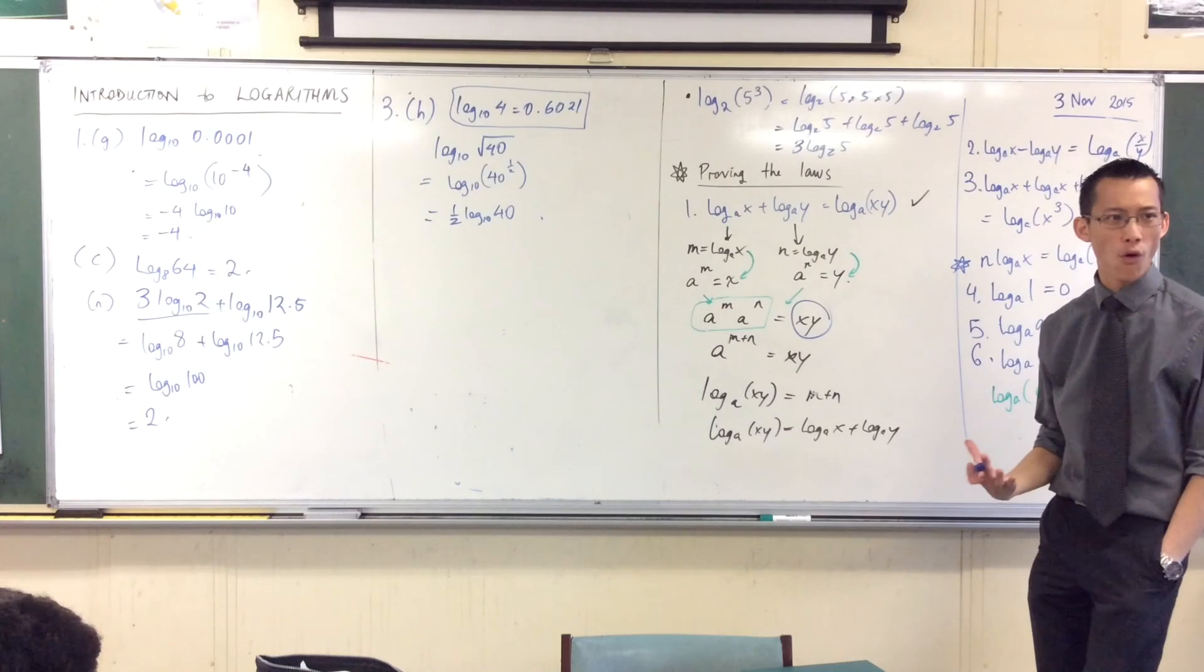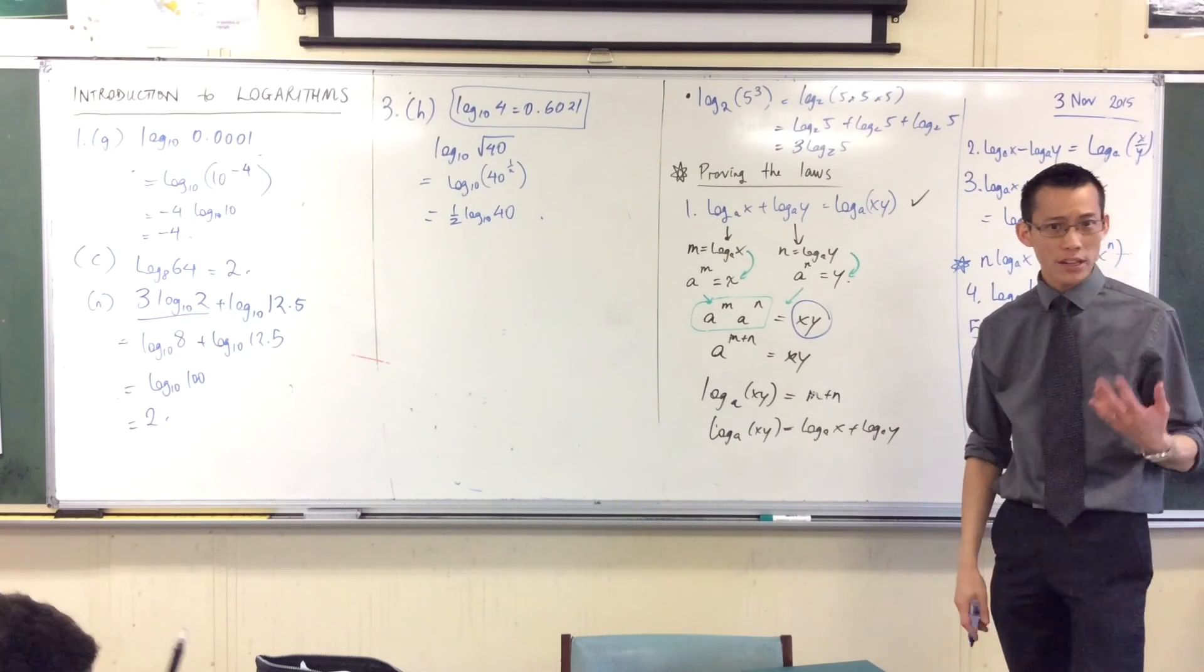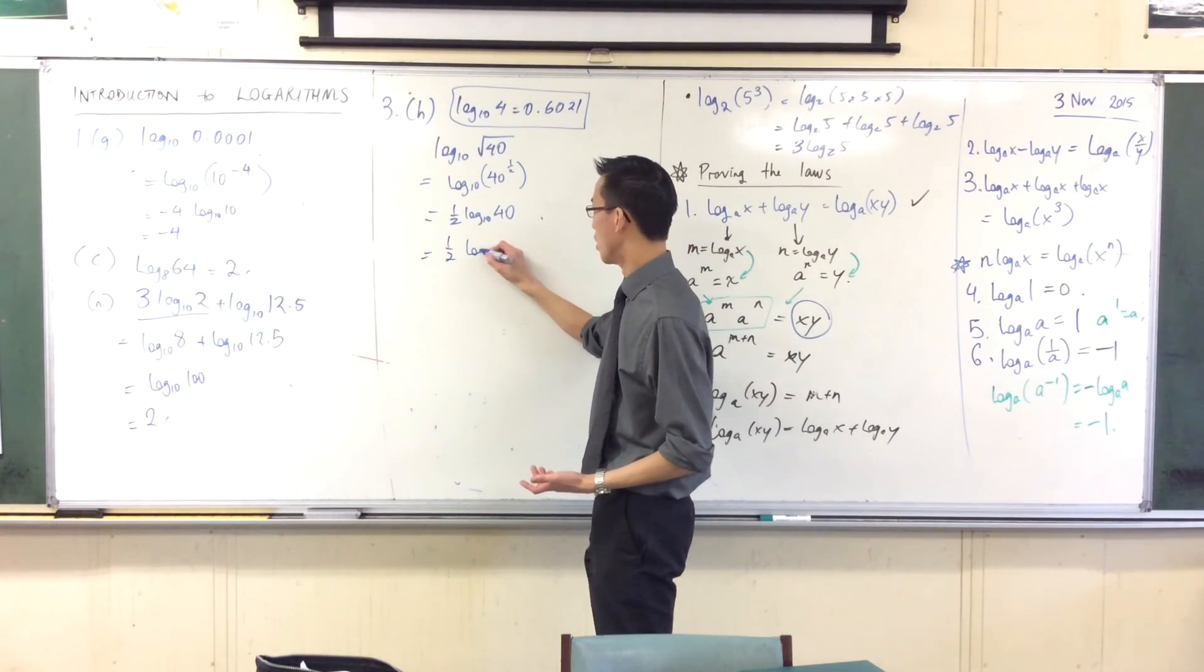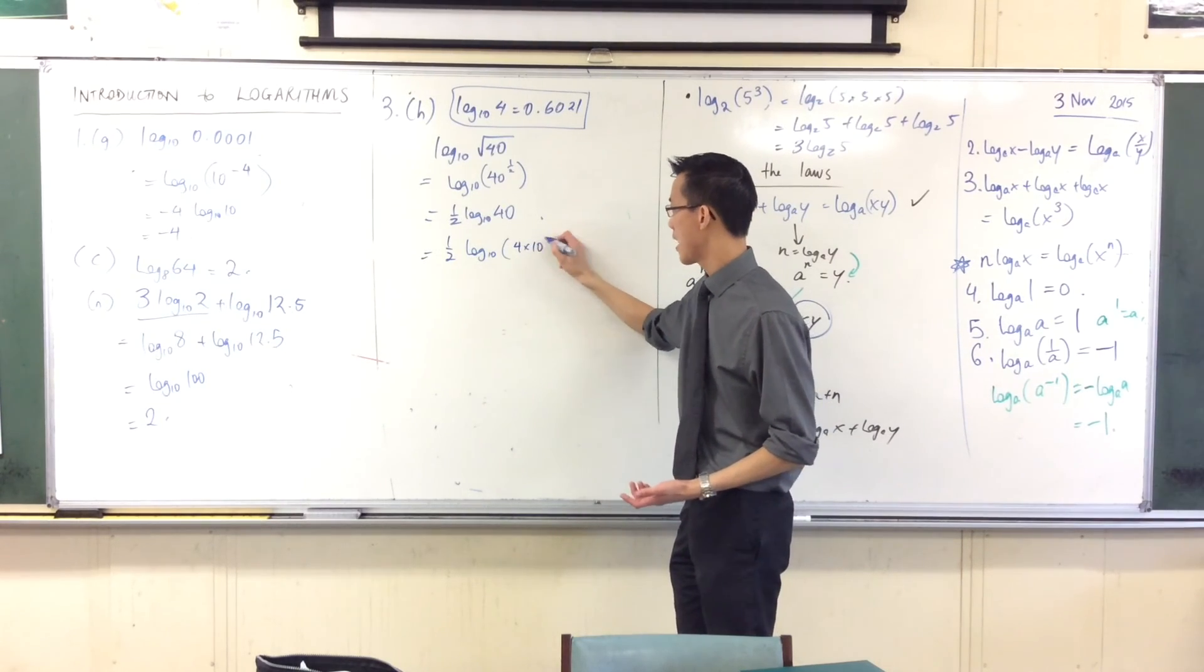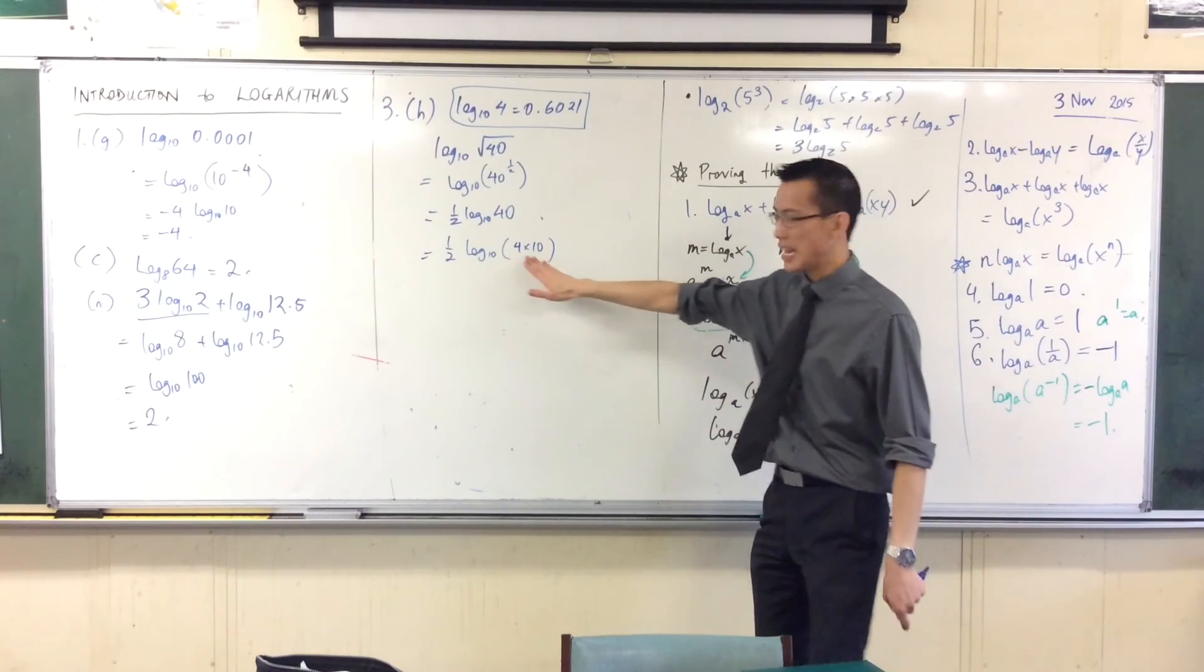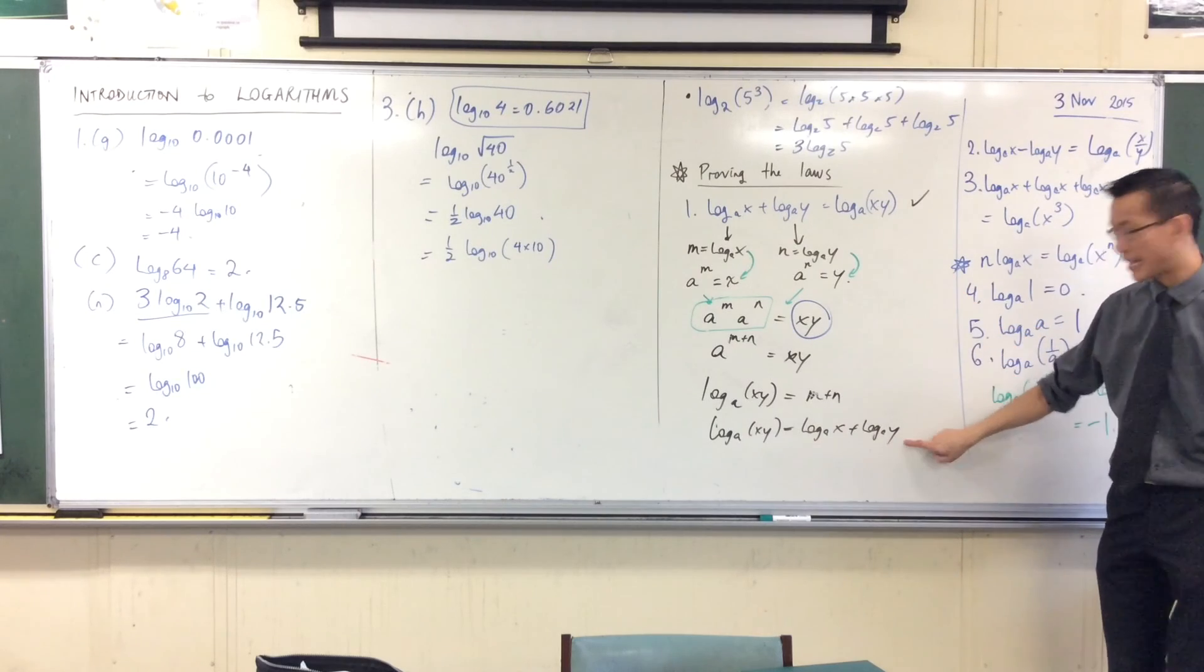40, 40. What do 40 and 4 have to do with each other? Well, 40 is 4 times 10, is it not? 4 times 10. So, I'm going to rewrite this as half log base 10 of 4 times 10. You okay with that so far?